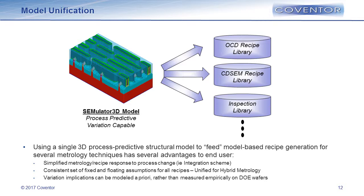As we start to expand this and see more metrology operations going to model-based technology, we have to be careful that we're not all developing our own models in a vacuum. There is high value in what we call model unification — being able to use a single 3D geometric process model to feed multiple different inspection or metrology sources. This allows a consistent set of structural assumptions and consistent feedback to process actions if it's a process-based model. This becomes very important as we progress into hybrid metrology, where you have multiple different metrology operations for the same type of measurement.